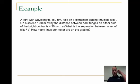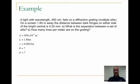Second example, let's look at this. Light with a wavelength of 450 nanometers falls on a diffraction grating, which is multiple slits, on a screen 1.8 meters away. The distance between dark fringes on either side of the bright central is 4.2 millimeters. What's the separation between a set of slits, and how many lines per meter are on the grating? Well, if we look at this, we know that we're given the wavelength of the light, given the distance from the screen to the slits, and given the separation, or the distance between the fringes.